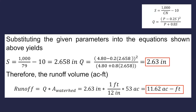Let's substitute in the given parameters into these equations. The equations are shown in the top right corner here. If you plug them in, you're going to solve for S, the basin retention, which is 2.658 inches. And then you can use that to solve for Q, the runoff, which comes out to 2.63 inches. Therefore, you can determine the runoff volume in acre-feet, which is 11.62 acre-feet.